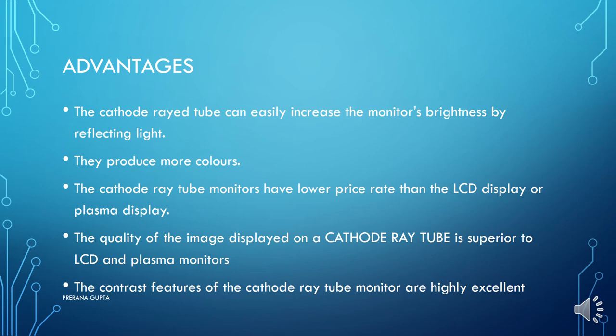Now the advantages. The cathode ray tube can easily increase the monitor's brightness by reflecting light. They produce more colors. CRT monitors have a lower price than LCD or plasma displays. The quality of the image displayed on a cathode ray tube is superior to LCD and plasma monitors. The contrast features of CRT monitors are highly excellent.